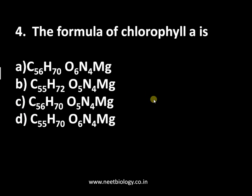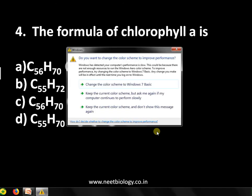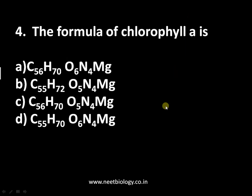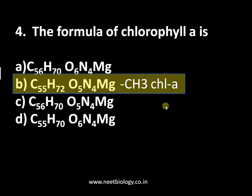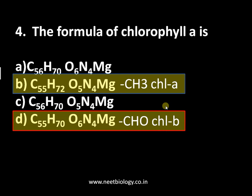Question number four: the formula of chlorophyll a is — option A: C55H70O6N4Mg, option B: C55H72O5N4Mg, option C: C56H70O5N4Mg, and option D: C55H70O6N4Mg. The answer is C55H72O5N4Mg. In chlorophyll a, the side group is a methyl group, whereas in chlorophyll b the side group is a CHO group, changing the formula to C55H70O6N4Mg. For details on other pigments like carotene and xanthophylls, refer to our video on photosynthetic pigments.